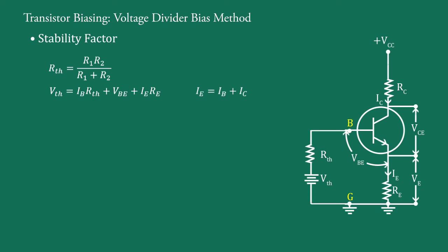Putting this value for this IE, we have VTH equal to IBRTH plus VBE plus IB plus IC into RE. Simplifying it, we get VTH equal to IBRTH plus VBE plus IBRE plus ICRE.